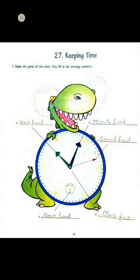Next, D — D is clock face. The clock face of the clock is called the dial. And last one is E — E is alarm hand. Its function is awaking people after a night sleep.